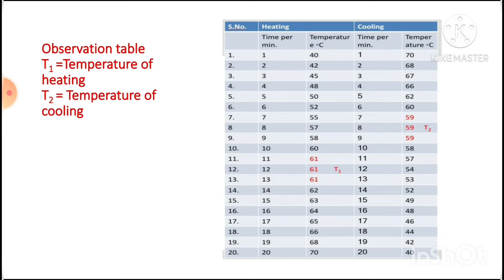Temperature per minute is taken as a series of 20 times. The temperature T1 as the temperature of heating here you can see it came three times at a stable state: 61, 61, 61, which is taken as temperature of heating. Similarly in temperature of cooling here it is taken as 59.